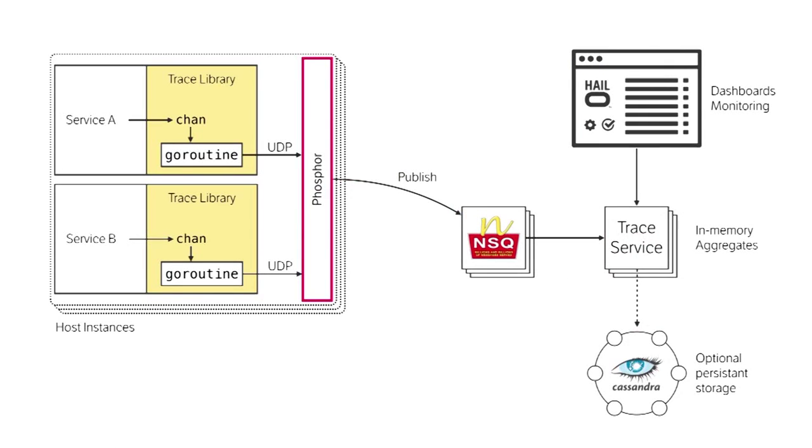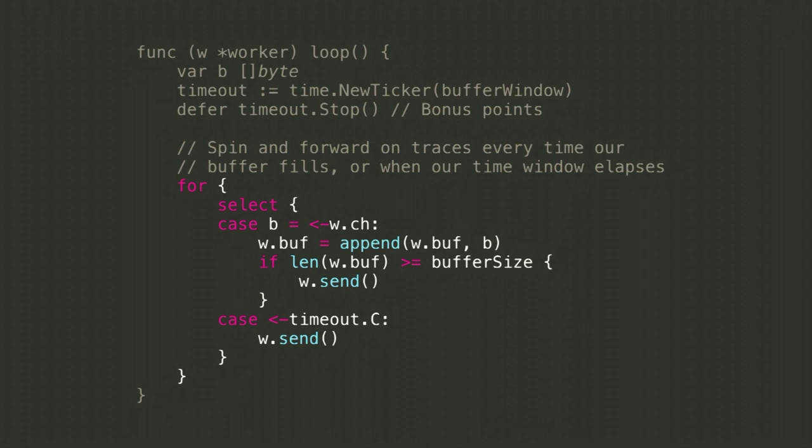We fire them over UDP on localhost to another client binary that runs there. Then we pick those up again on the other end with a similar pattern where we're selecting a number of requests, and we either fire on a timeout after a period of time, or if we fill up our buffer we fire them all on. So we can pass them a bit more efficiently — passing a buffer of, say, 200 messages.